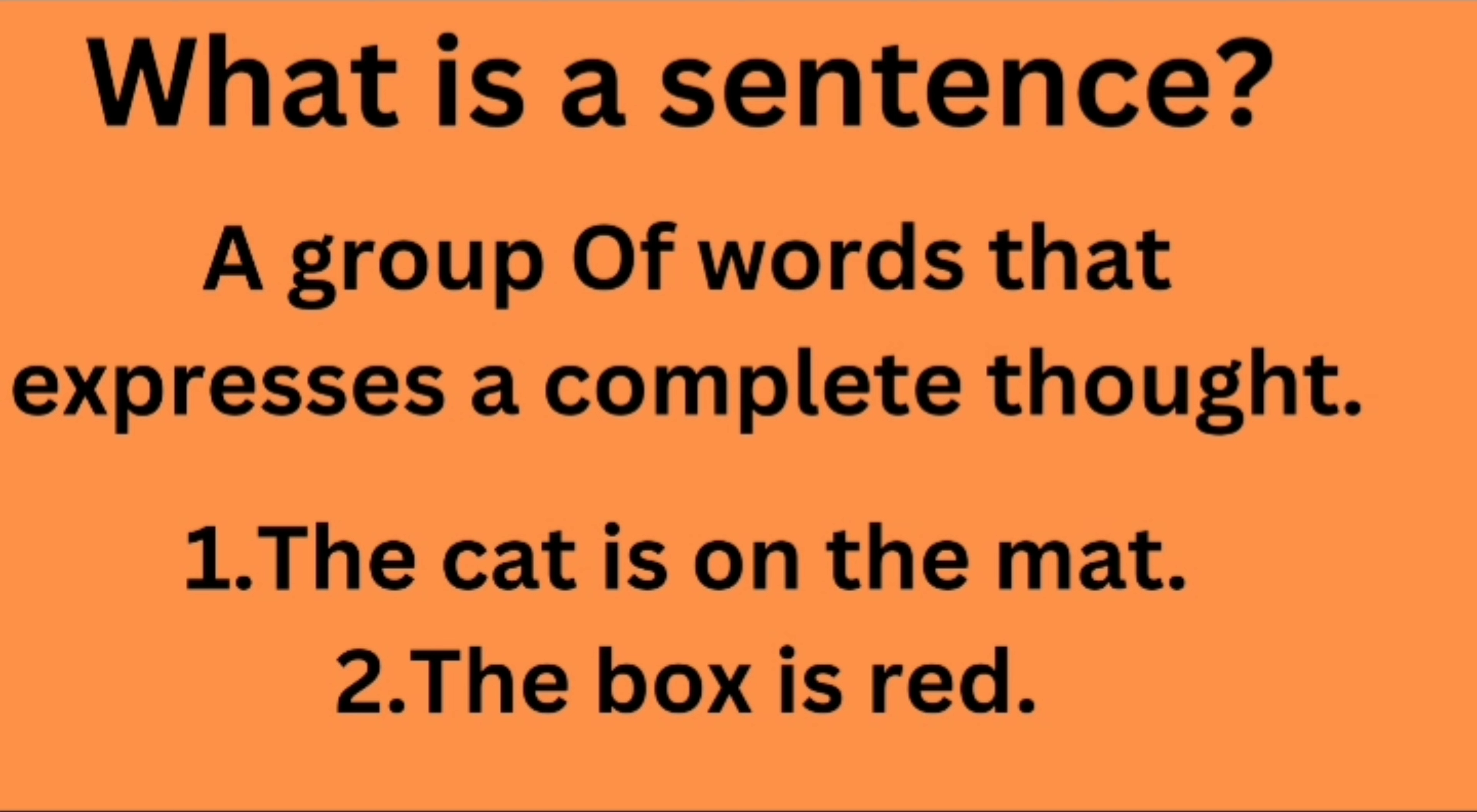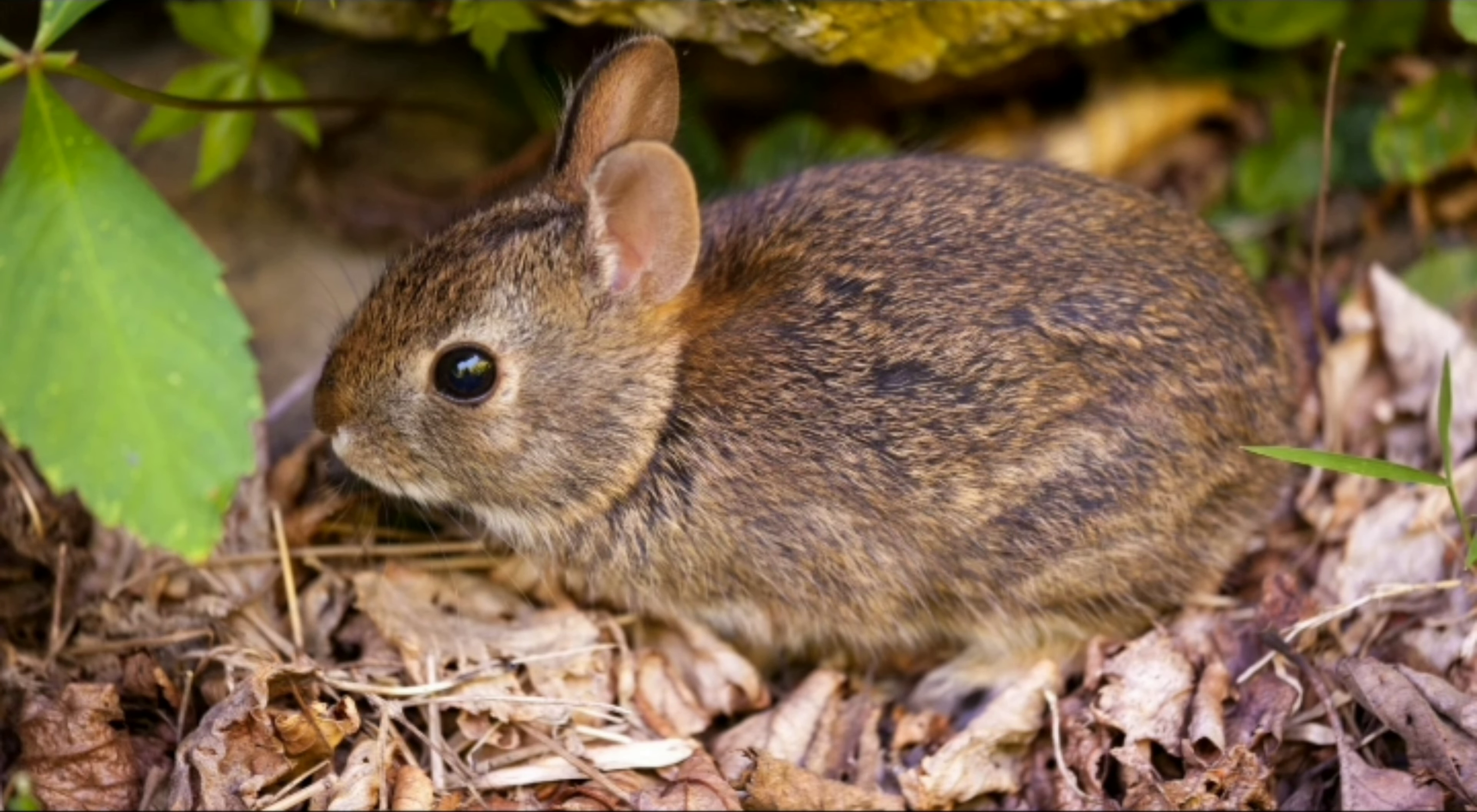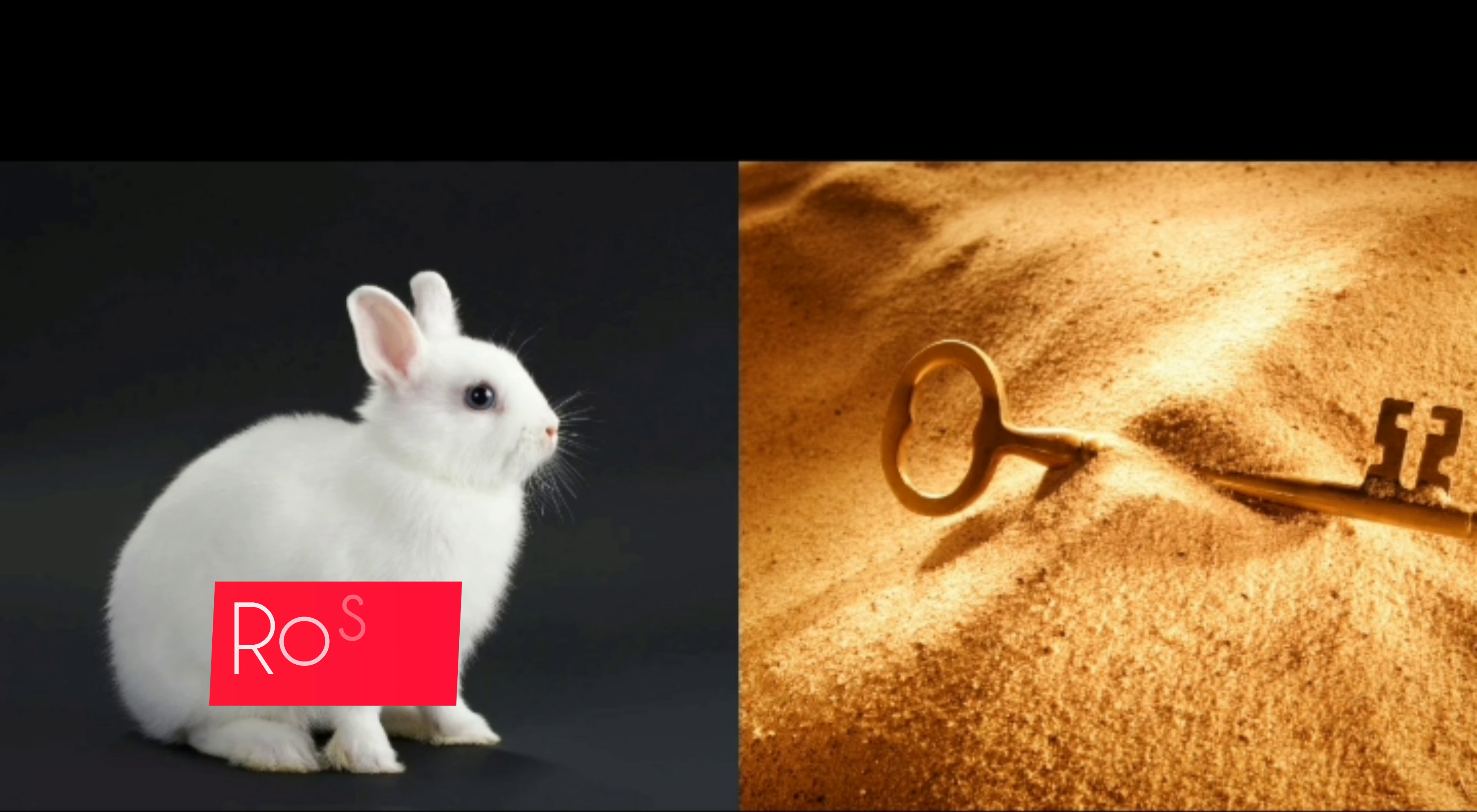Now coming to the type of sentence through a story. Once upon a time, in a magical forest, there lived a curious little rabbit named Rosie. Rosie loved to explore the woods and discover new things every day.